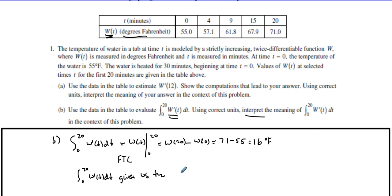Using correct units, interpret the meaning of this. So the integral from 0 to 20 of W'(t) dt gives us the change in temperature, in temperature in degrees Fahrenheit from 0 to 20 minutes. It's the change in the temperature.